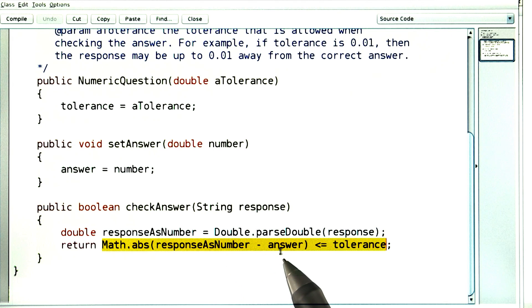You take the difference of the two numbers that you want to compare, take the absolute value, and check whether it's at most the given tolerance.